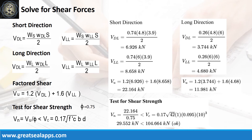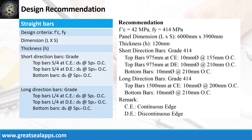At short direction, the shear force from dead load is 6.926 kN and live load is 8.658 kN, for a factored shear force of 22.164 kN. At long direction, the shear force from dead load is 3.744 kN and live load is 4.68 kN, for a factored shear force of 11.981 kN. The nominal shear force is 29.552 kN, less than the 104.664 kN concrete capacity.